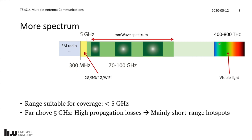Further up in frequency we have visible light, and there are also technologies for wireless communications using visible light. In 5G, it is particularly the range including traditional frequencies up to around 80 GHz that is considered, so more millimeter wave spectrum is being added. But the problem with going up in frequency is the higher propagation losses. For example, just putting your hand over your eyes blocks visible light, and similar effects occur more and more at millimeter wave frequencies.